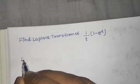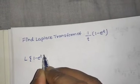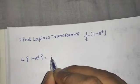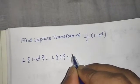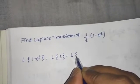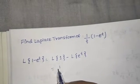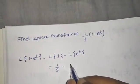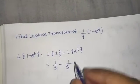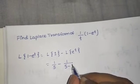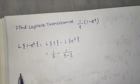Laplace of (1 minus e power t) can be rewritten as Laplace of 1 minus Laplace of e raised to power t. Laplace of 1 is 1 upon s. Laplace of e raised to power t is 1 upon s minus a, where a is 1, so that gives 1 upon s minus 1.